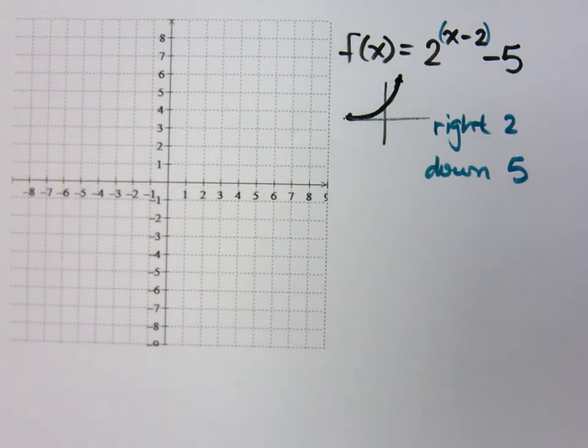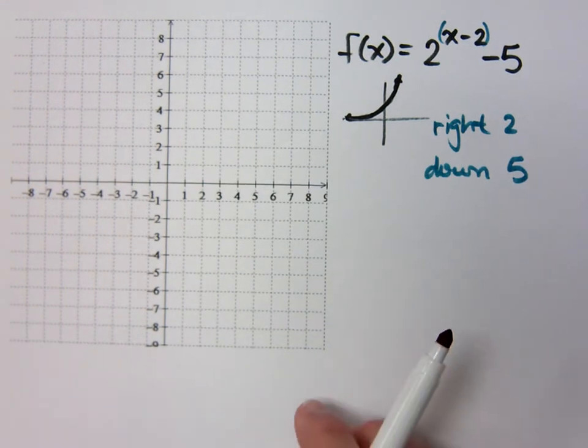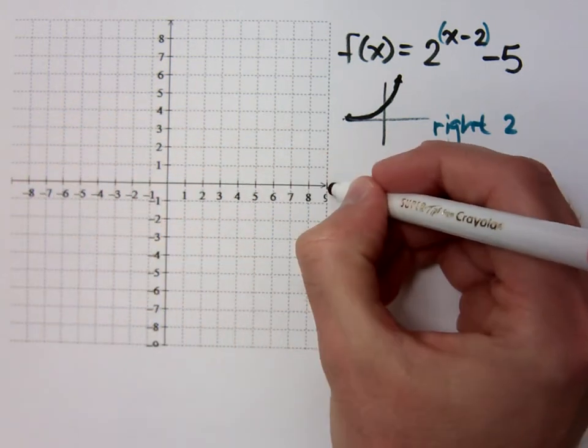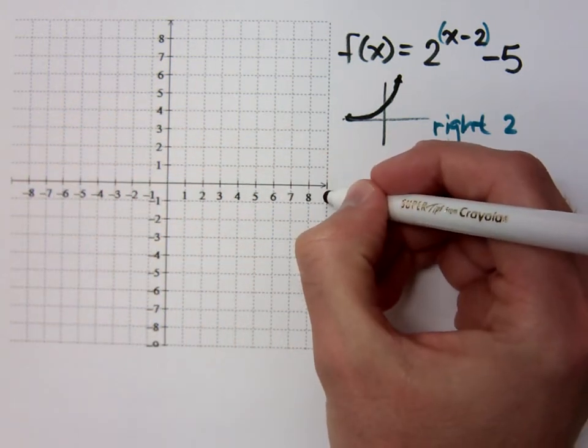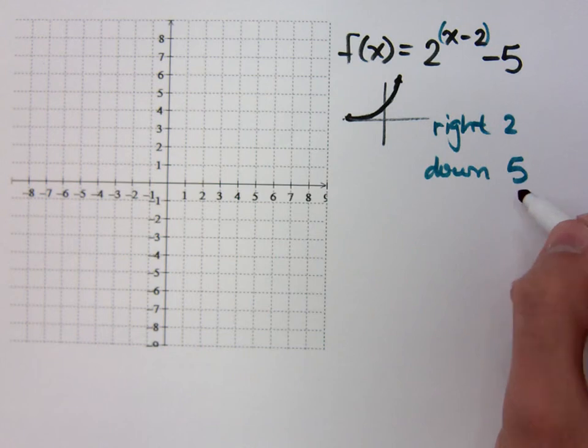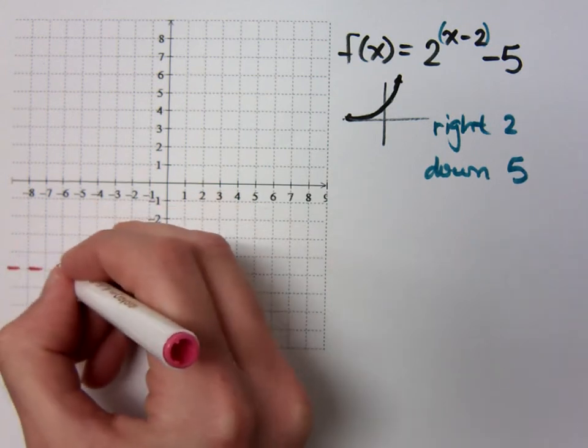If I'm going down 5 units, that meant that even though my horizontal asymptote was right here at y equals 0, where will it be now? Down 5, so y equals negative 5.